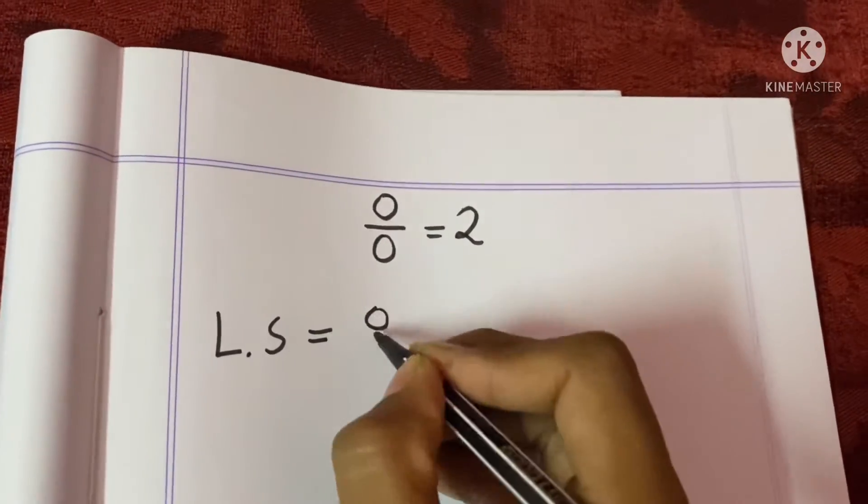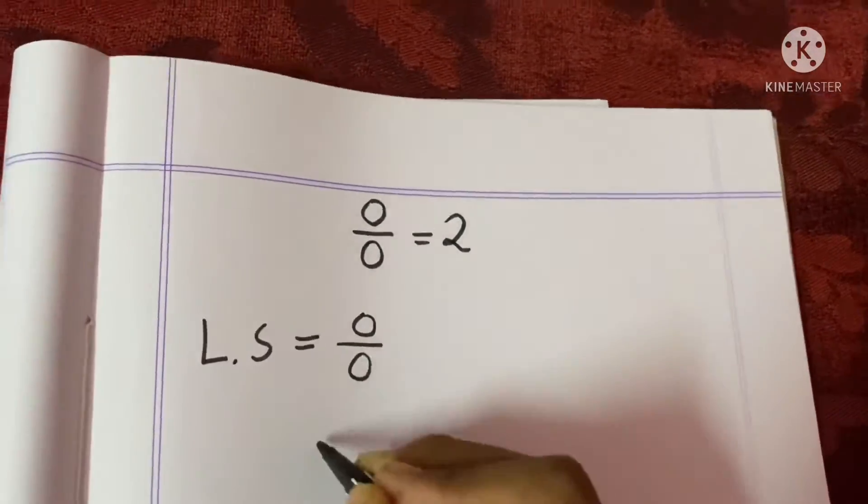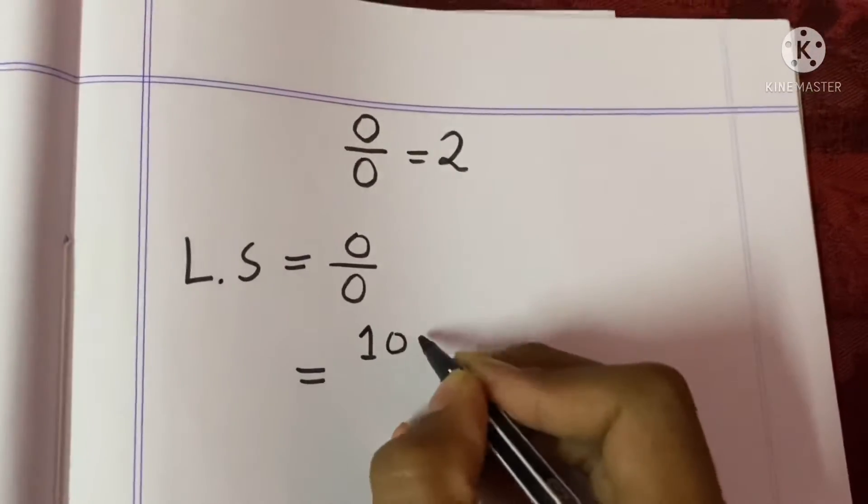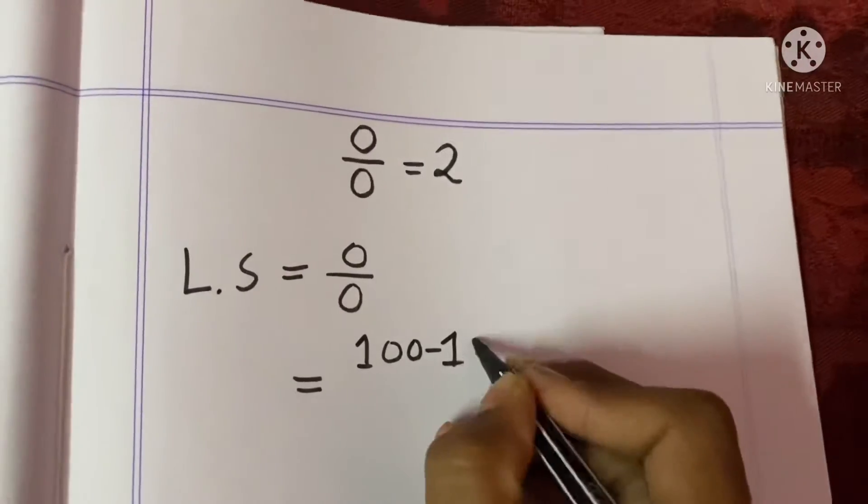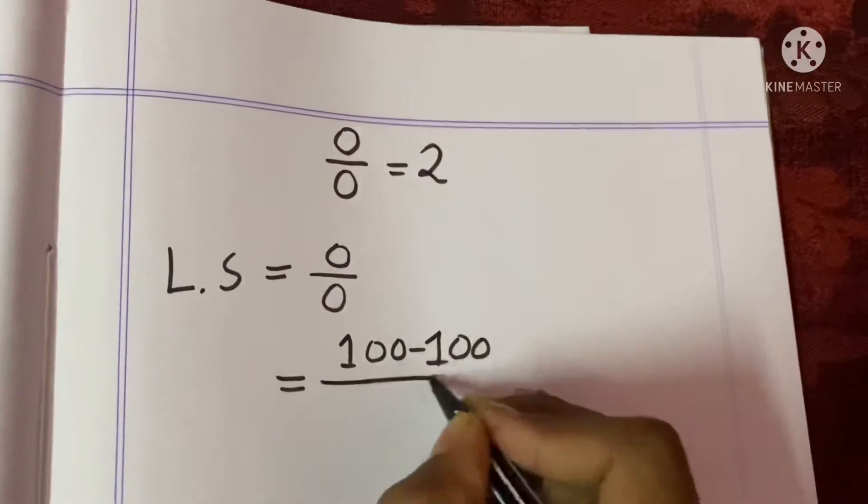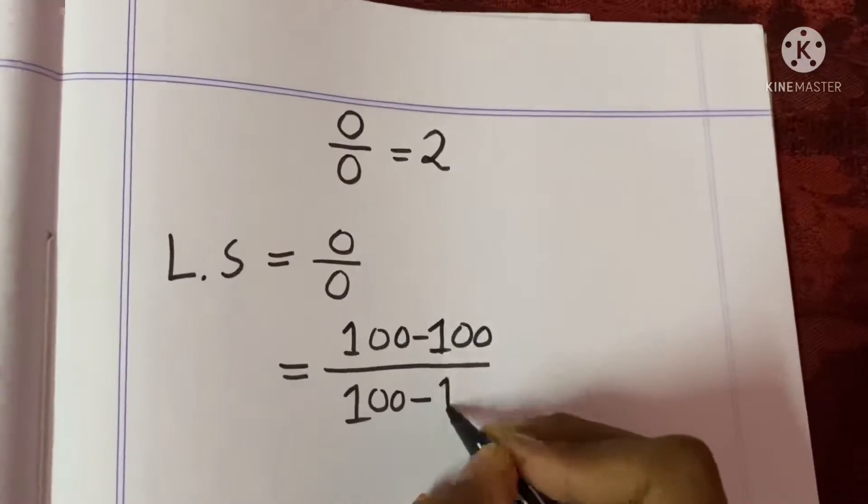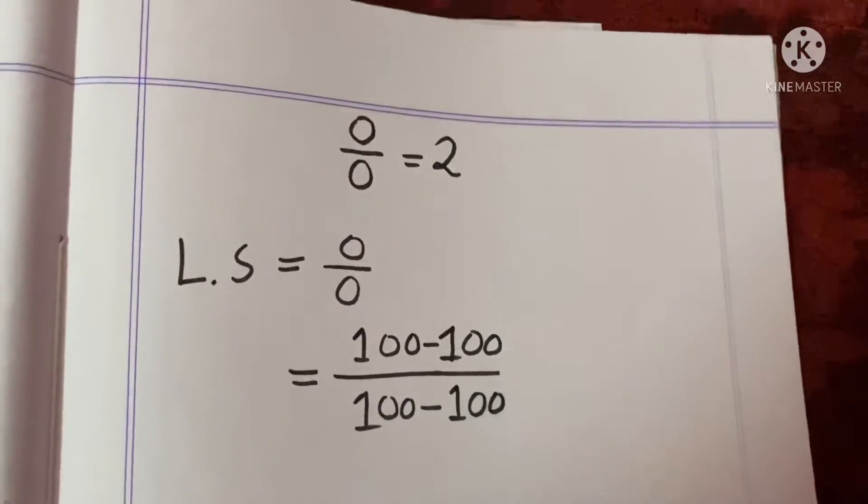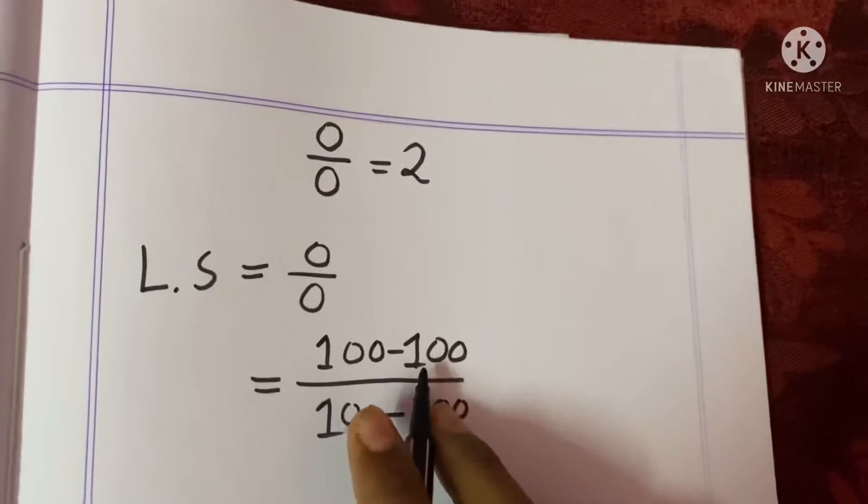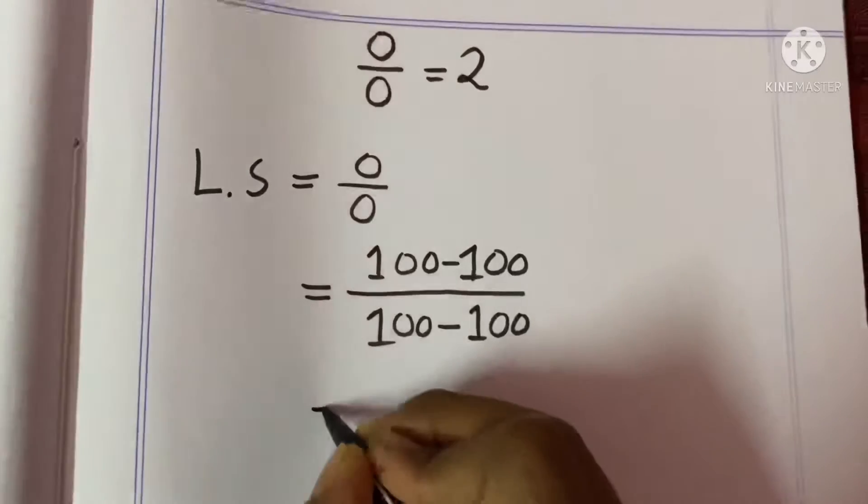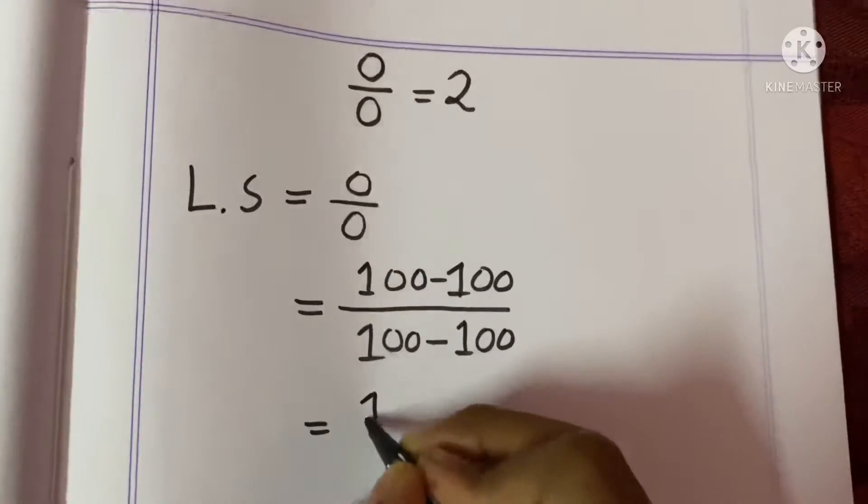L.S. means left side equals 0 divided by 0, right? And 0 divided by 0 means 100 minus 100 divided by 100 minus 100, right? 100 minus 100 equals also 0, right? Now I can write